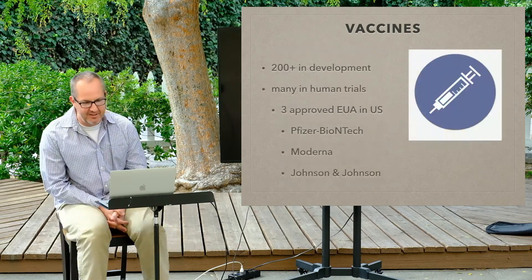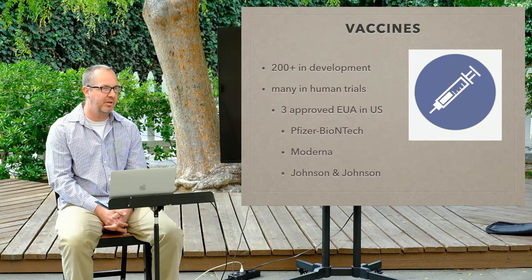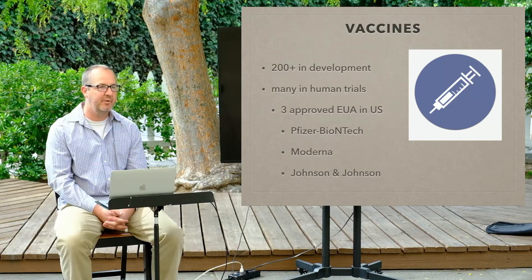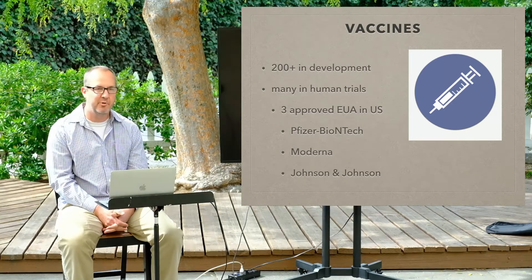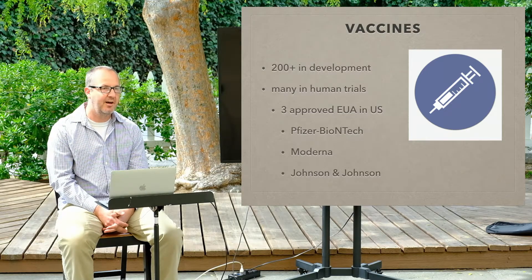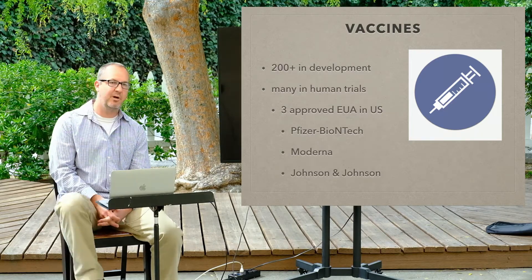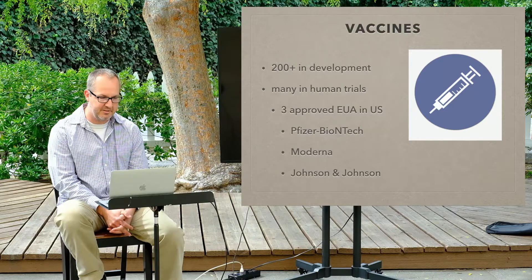Vaccines — so this is something interesting. There were about 200 in development as of last summer. Quite a few human trials happened. There are three approved in the U.S. — EUA means Emergency Use Authorization. They're not fully approved by the FDA; it's an emergency authorization. You might say, 'That's not the regular path, why are we rushing this?' Well, the answer is it's a pretty unique situation. The three in the U.S. are Pfizer, Moderna, and Johnson and Johnson.